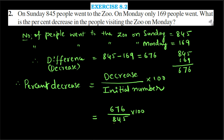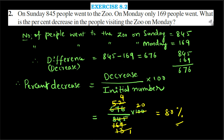Let us cancel: dividing by 5, then checking divisibility by 13. 676 divided by 13 is 52, and 169 divided by 13 is 13. After cancellation, we get 4 times 20, which equals 80%. So 80% of people decreased from Sunday to Monday. This is the final answer.